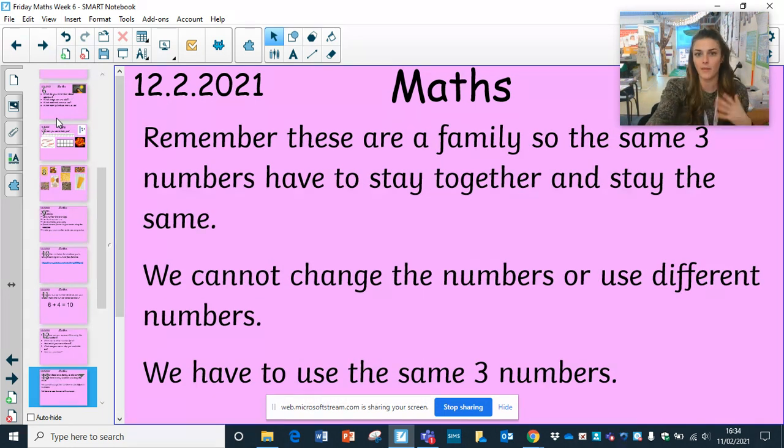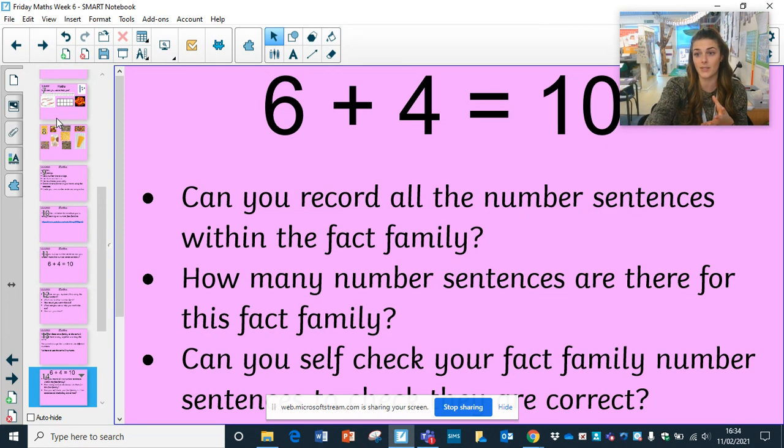So remember, these are a family. The same three numbers have to stay together and they have to stay the same. We cannot change the numbers or use different numbers. We have to use the same numbers, and I've written that a few times. That's really important. So we're moving those numbers around within that number sentence to create other number sentences.